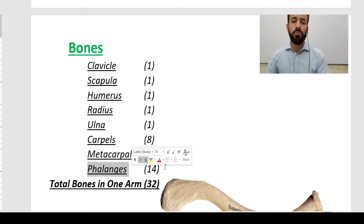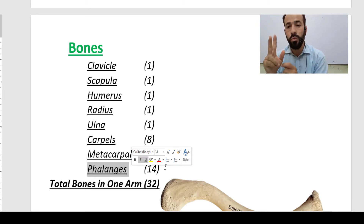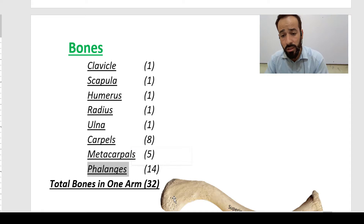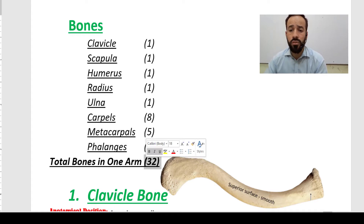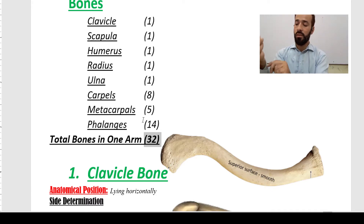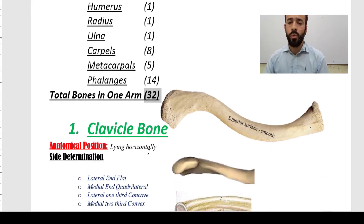There are fourteen phalanges bones in the fingers — three in each of the four fingers and two in the thumb (proximal and distal), giving fourteen total. If you calculate all these bones, there are about thirty-two bones in one upper limb and thirty-two in the other, making sixty-four bones total in both upper limbs.